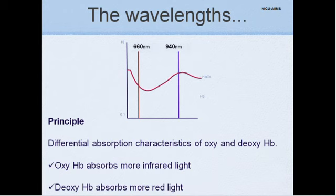The principle of pulse oximetry is based on the differential absorption characteristics of oxygenated, red, and deoxygenated, dark hemoglobin. Oxygenated hemoglobin absorbs more infrared light allowing more red light to pass through, whereas deoxygenated hemoglobin absorbs more red light allowing more infrared light to pass through.